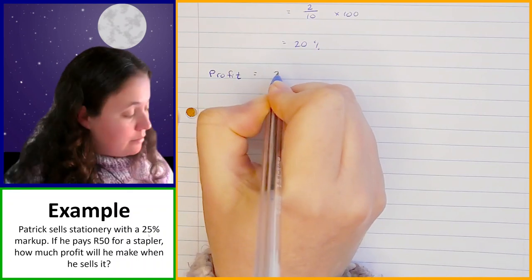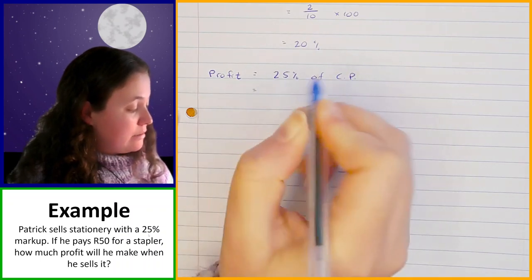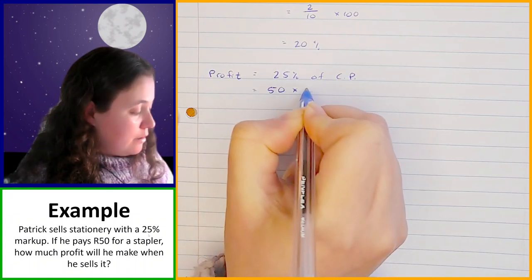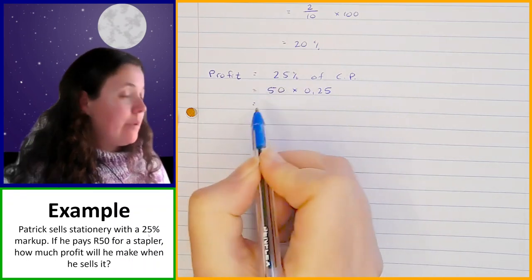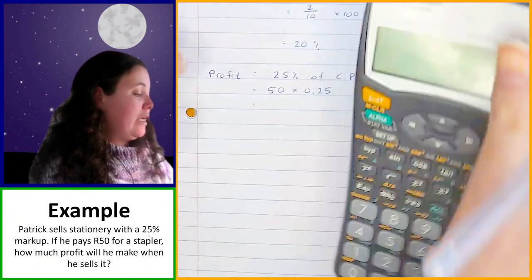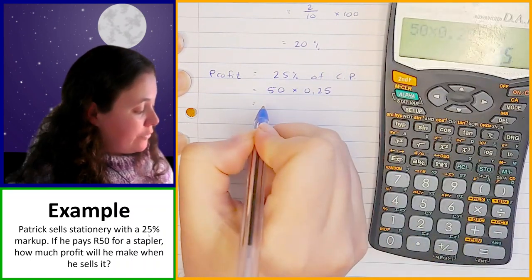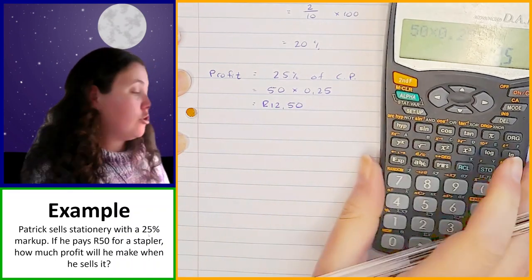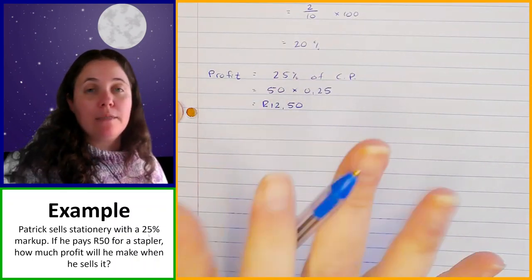So it's going to be 25% of the cost price, which in this case was 50 Rand. So I could say 50 multiplied by 0.25 — remember, we can write it as a decimal fraction representing the 25% — and then we're going to work that out, and that gives us 12 Rand 50. Now remember, when you're working with money, you always have to show both decimal places. We have to round off to two decimal places unless there are no decimal places.